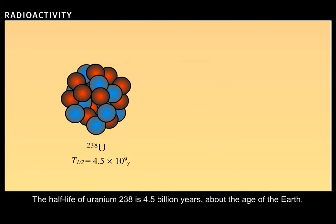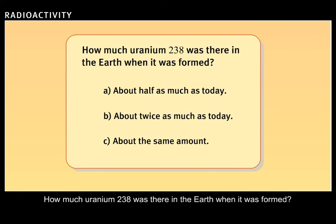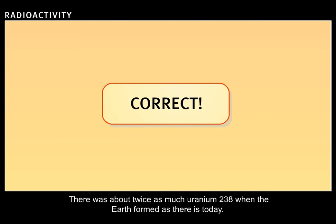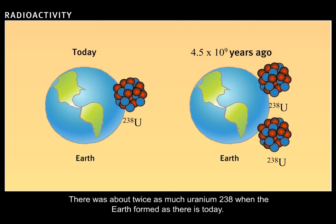The half-life of uranium-238 is 4.5 billion years, about the age of the Earth. How much uranium-238 was there in the Earth when it was formed? Correct! There was about twice as much uranium-238 when the Earth was formed as there is today.